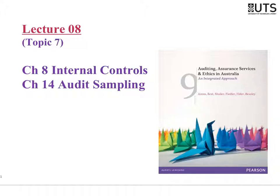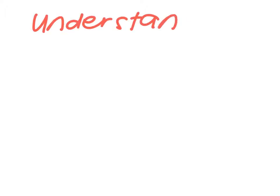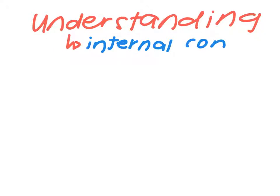Let me show you a conceptual diagram of how everything links together. At the very beginning of the audit, we always start the same way: gaining an understanding of the business. This includes gaining an understanding of the internal control structure and systems within the business. That's included within that understanding stage.